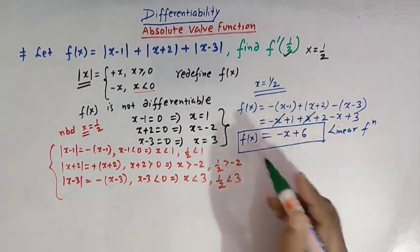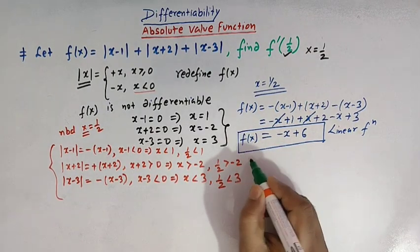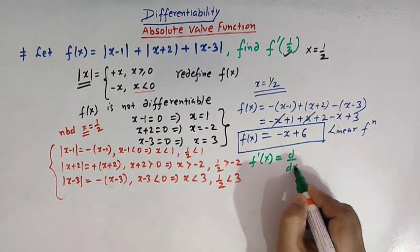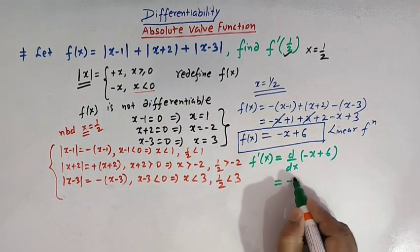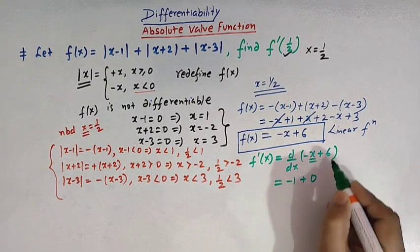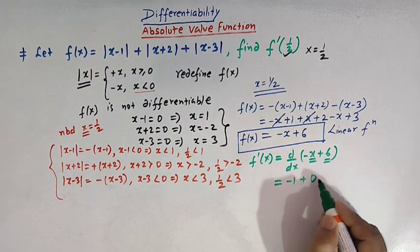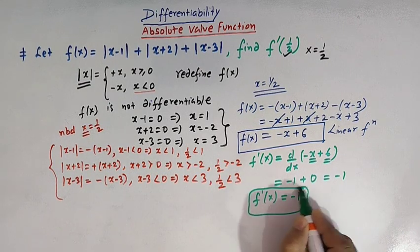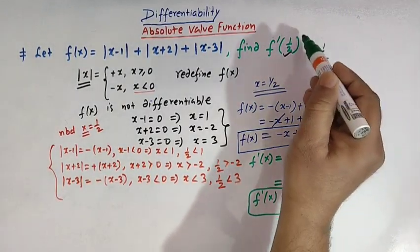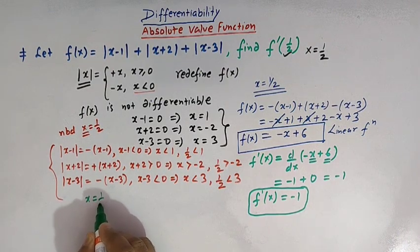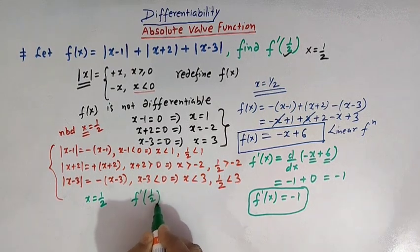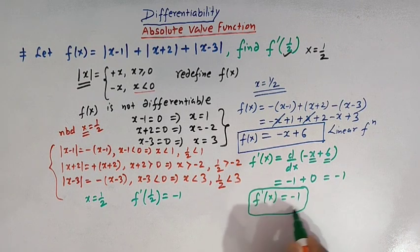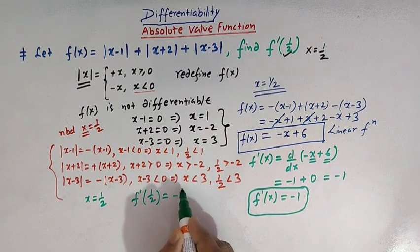Now it is easy to find the derivative of f of x. f prime of x equals d by dx of minus x plus six, which gives minus one plus zero, so f prime of x equals minus one. The derivative of x is one and six is a constant with derivative zero. Now our task is to find f prime of one half. Since f prime of x equals the constant minus one, independent of x, f prime of one half equals minus one.